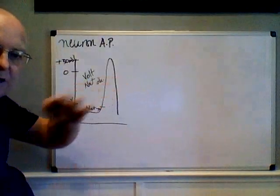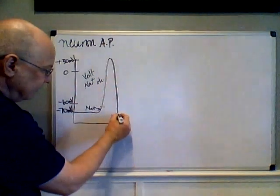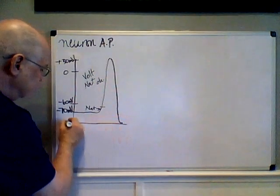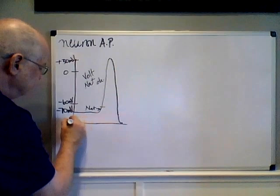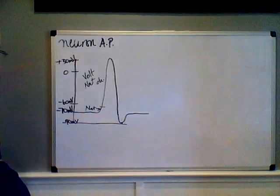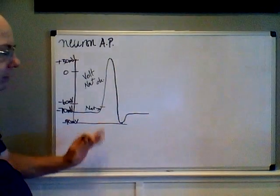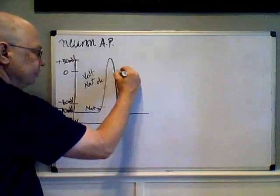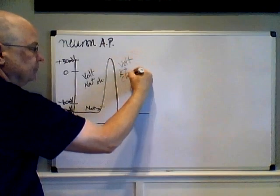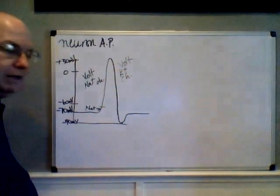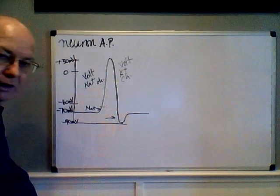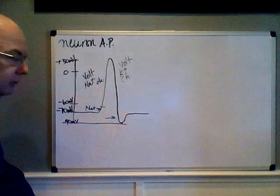Because the potassium channels close a little more slowly, excess potassium leaks out before they are all shut, and that causes the cell to hyperpolarize to minus 90 millivolts. Then the sodium-potassium pump will restore everything to resting potential. These voltage-gated potassium channels remain open a little longer.